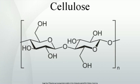Some termites may also produce cellulase of their own. Fungi, which in nature are responsible for recycling of nutrients, are also able to break down cellulose. The enzymes utilized to cleave the glycosidic linkage in cellulose are glycoside hydrolases, including endo-acting cellulases and exo-acting glucosidases. Such enzymes are usually secreted as part of multienzyme complexes that may include dockerins and carbohydrate binding modules.